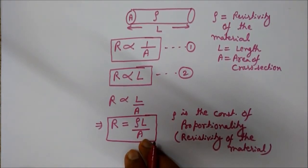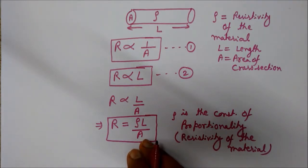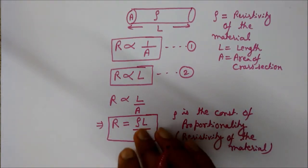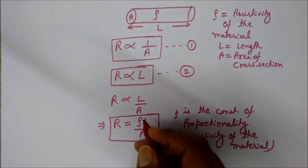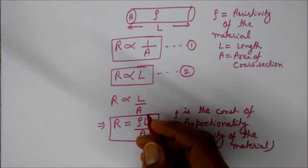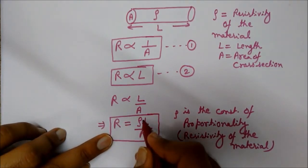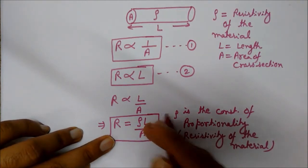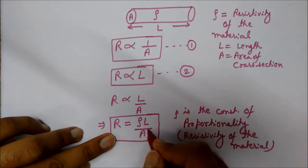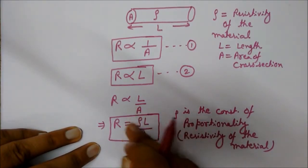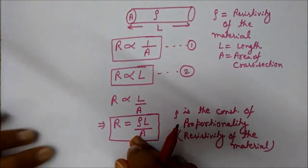Rho depends on the properties of the material used for conduction of electricity. The hindrance offered by the unique lattice structure and ions of the material is different for different materials. To summarize: resistance equals rho times L by A — directly proportional to length, inversely proportional to area of cross-section, and depends on the resistivity of the material, which is unique for each material.